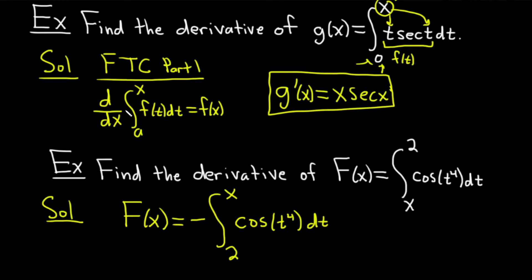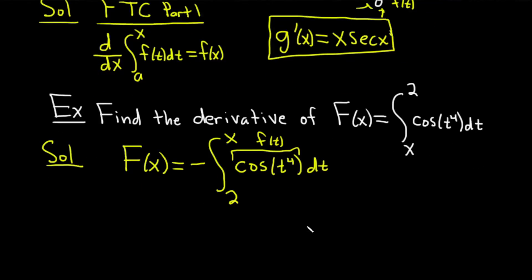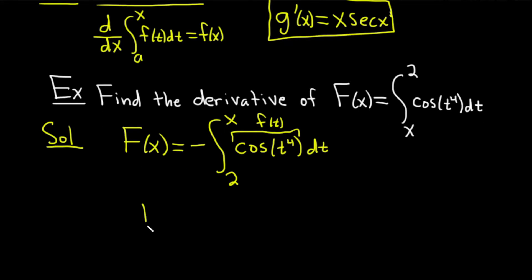So now it matches the formula for FTC, the Fundamental Theorem of Calculus Part 1. We have the x up top and the a is 2. So in this case, our f(t) is simply the cosine of t to the fourth. When we take the derivative, we just put an x where the t is. It's really that simple. So F'(x) is equal to cosine...